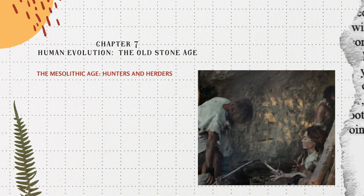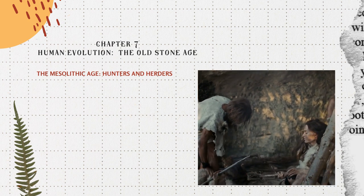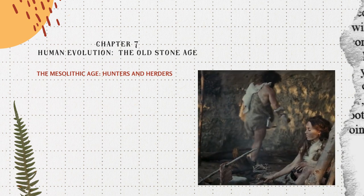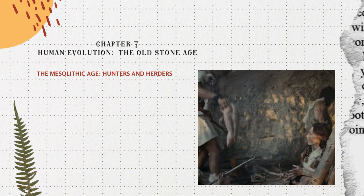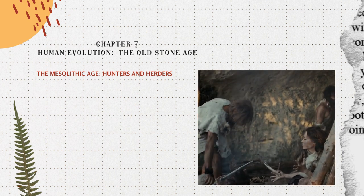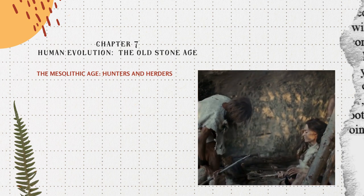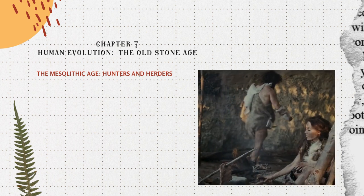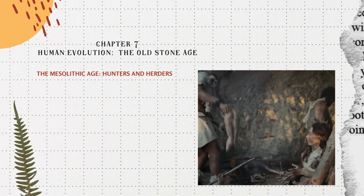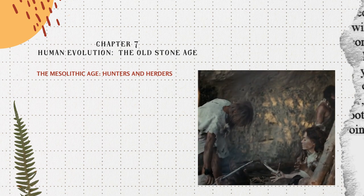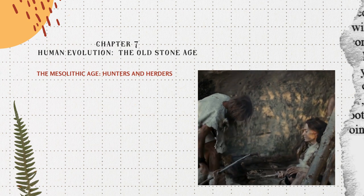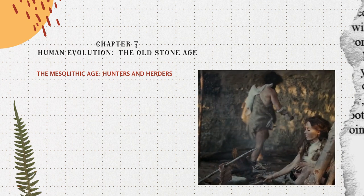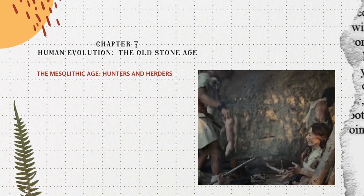In 9,000 BC began an intermediate stage in Stone Age culture called the Mesolithic Age. It intervened as a transitional phase between the Paleolithic and the Neolithic or New Stone Ages. The Mesolithic people lived on hunting, fishing and food gathering. At a later stage, they also domesticated animals. The first three occupations continued the Paleolithic practice, whereas the last developed in the Neolithic culture. Thus, the Mesolithic Age marked a transitional phase in the mode of subsistence leading to animal husbandry.